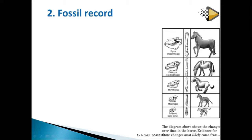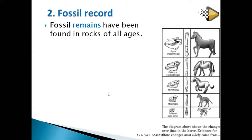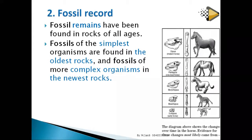For example, with the horse fossil record, you find remains in different strata — strata means layers in science. Simple forms are found in lower strata and more complex ones in upper layers. Fossils of the simplest organisms are found in the oldest rocks, while more complex organisms are found in the newest rocks.